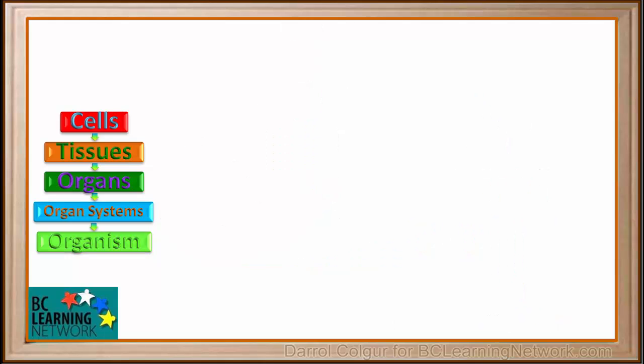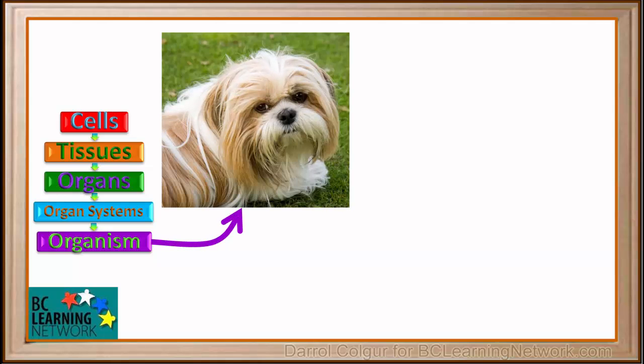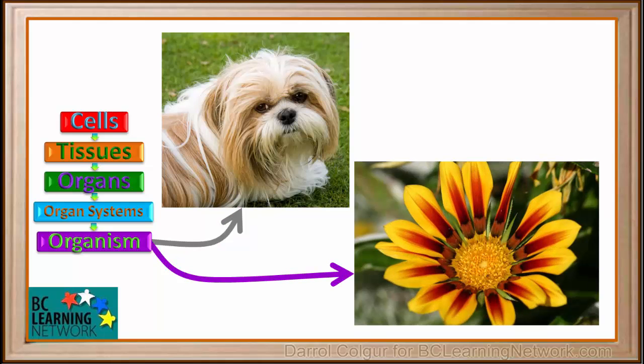An organism is a complete individual animal or plant, including all of its cells, tissues, organs, and organ systems. Here is a cute organism. And here is a pretty one.